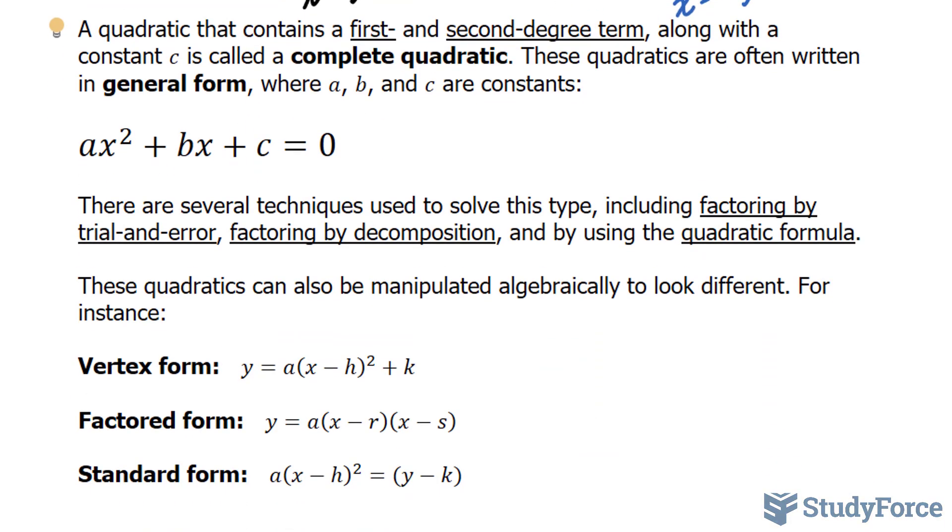Finally, a quadratic that contains a first and second degree term along with a constant which we'll call c is called a complete quadratic. These quadratics are often written in general form where you can easily spot the a, b, and c constants as you see right here.